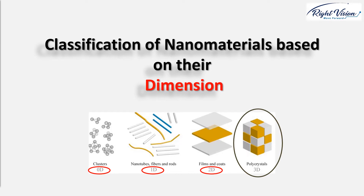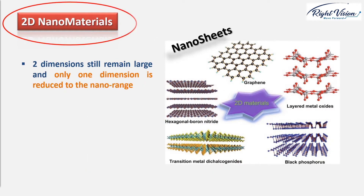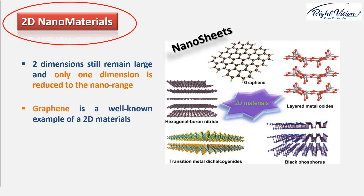Under the same deduction, a two-dimensional material is a material whose two dimensions still remain large and only one dimension is reduced to the nano-range. Such structures are like very thin sheets, called nanosheets. A well-known example of a nanosheet is graphene, the thinnest two-dimensional material in the world. It consists of single or multi-layers of carbon atoms within a hexagonal lattice.